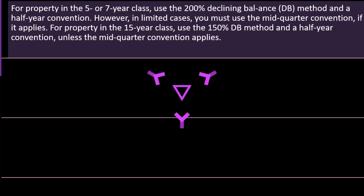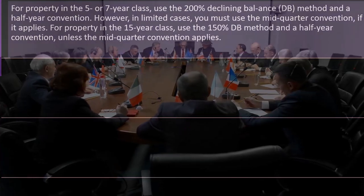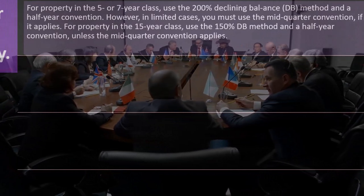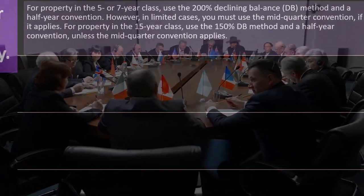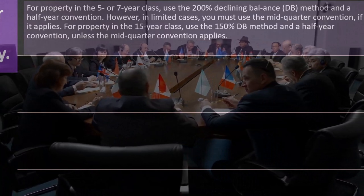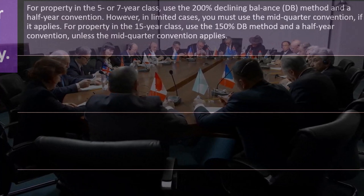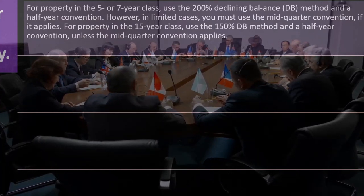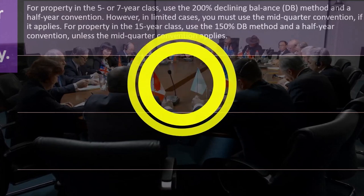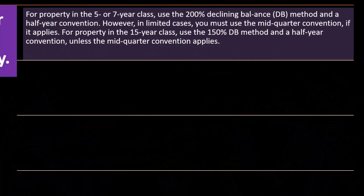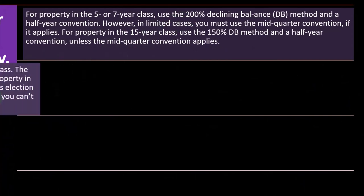So it's still conceptually sound — it's not just a crazy political thing. That's the double declining method with a half-year convention. However, in limited cases you must use the mid-quarter convention if it applies. Half-year is the standard unless you bought a bunch of stuff at the end of the year, in which case you flip over to mid-quarter. Property in the 15-year class uses the 150% declining balance method — that's accelerated, but not as accelerated as the 200% method — and a half-year convention unless mid-quarter applies.